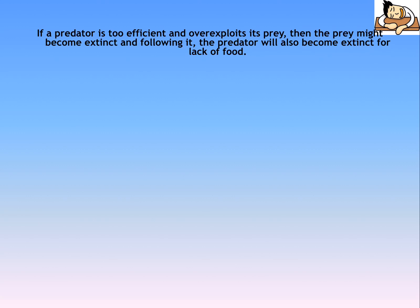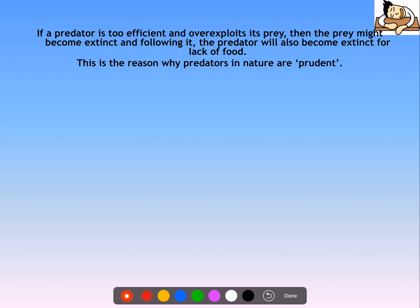Agar predator bahut efficient hai aur overexploit karta hai apne prey ko, toh ecosystem instability ho sakti hai — kyunki prey extinct ho sakta hai. Aur agar prey extinct ho gaya, toh predator bhi eventually extinct ho jayega kyunki uska food available nahi hoga. So if the predator is too efficient and overexploits its prey, the prey might become extinct, and following it, the predator will also become extinct for lack of food. Therefore, predators in nature are prudent — they do not overexploit their prey.